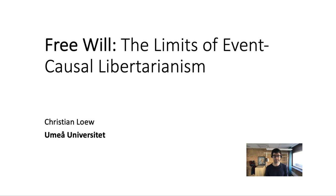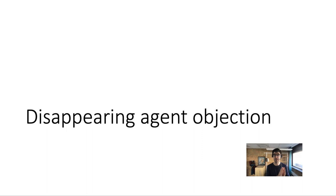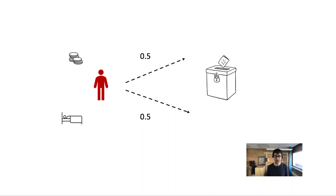Before Franklin gets to the main objection, he discusses a different objection which he thinks is less threatening. To see this objection — called the disappearing agent objection — think back to the case of the thief who considers whether he wants to steal money from the poor box in the church. The thief has good reasons for either decision.